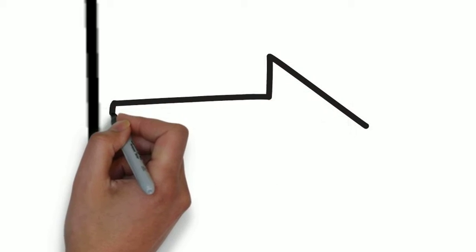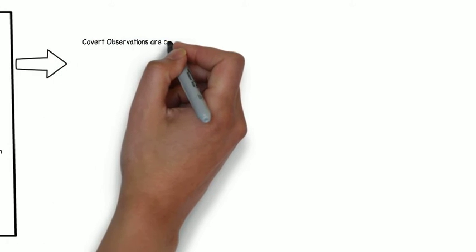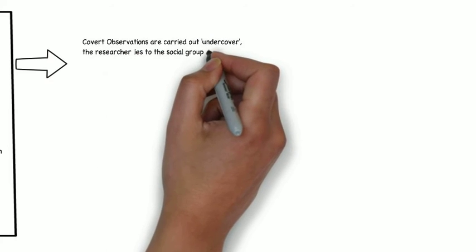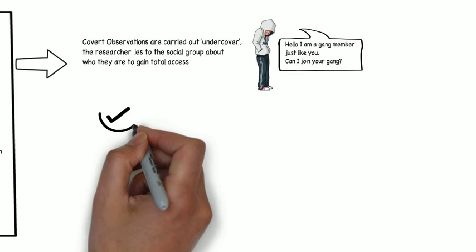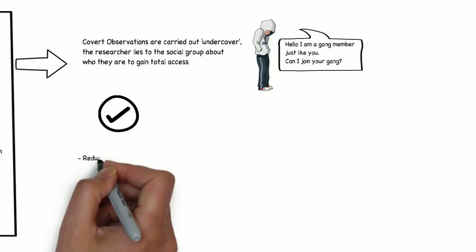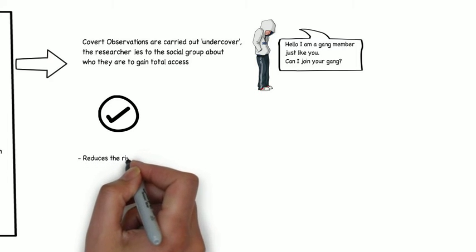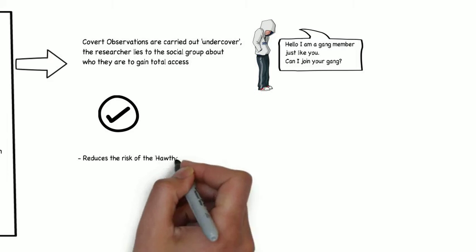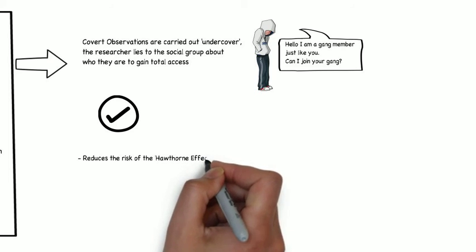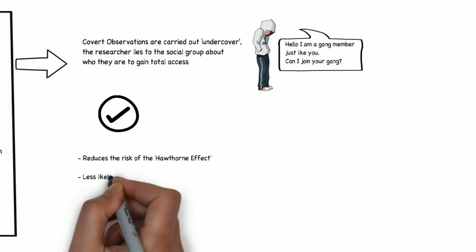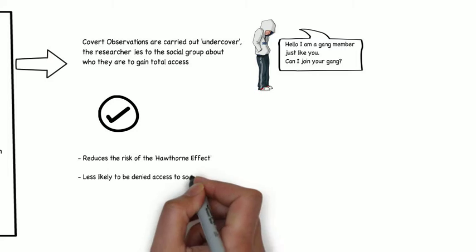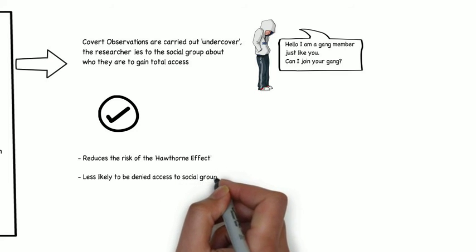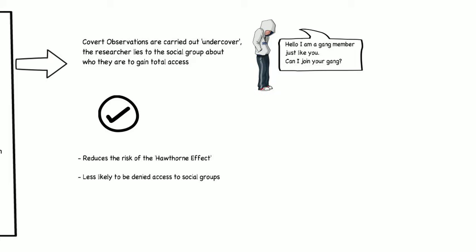Covert observations, on the other hand, are the complete opposite. These studies are carried out undercover, where a researcher lies about who they are and what their intentions are in order to be viewed as an actual member of the group. Some prefer this method as it reduces the risk of creating the Hawthorne effect and is sometimes the only way of obtaining valid results. Also, by lying about your identity you are less likely to be refused entry — think again about the criminal gang, where lying about your identity may be the only way to enter.